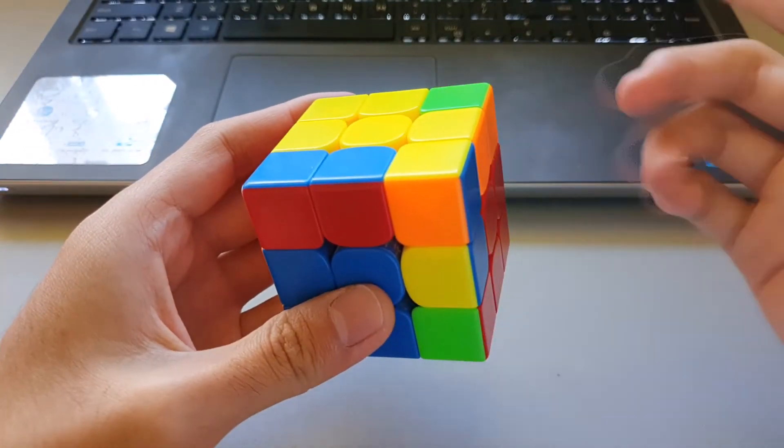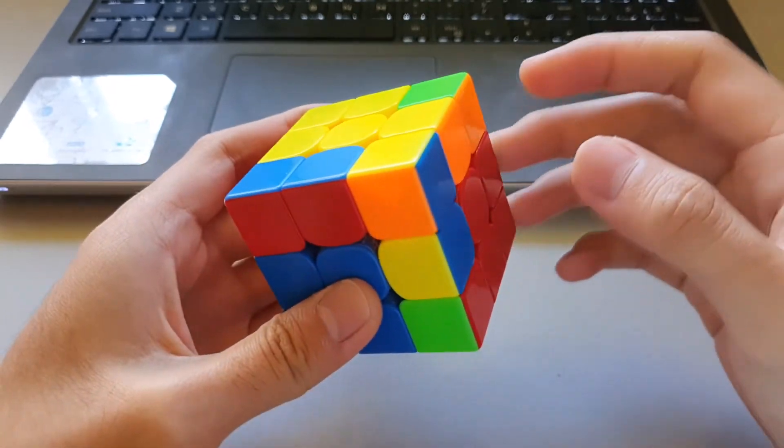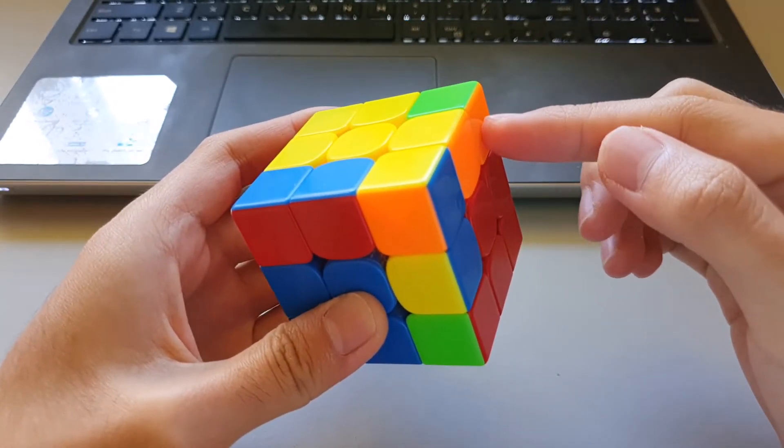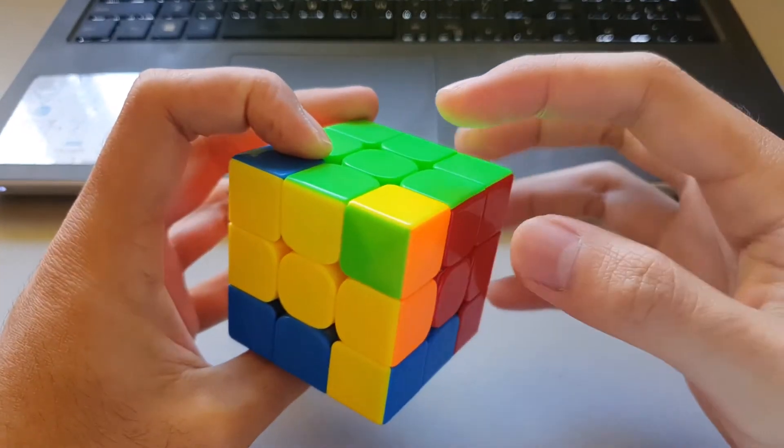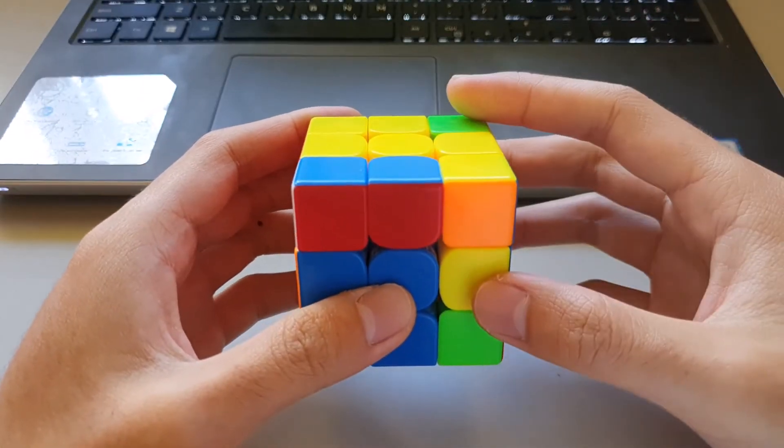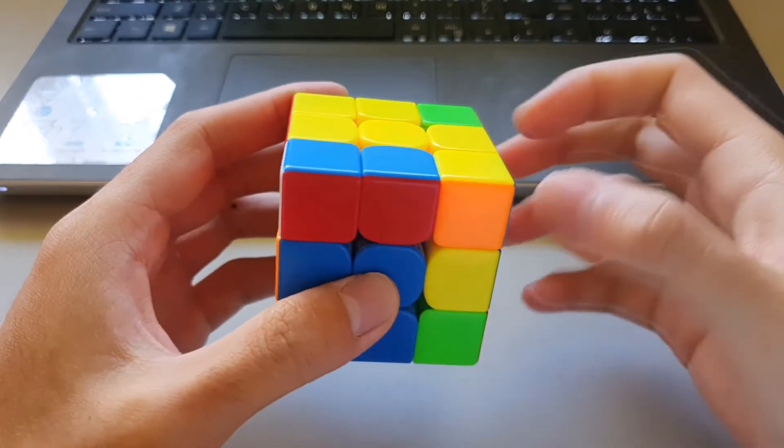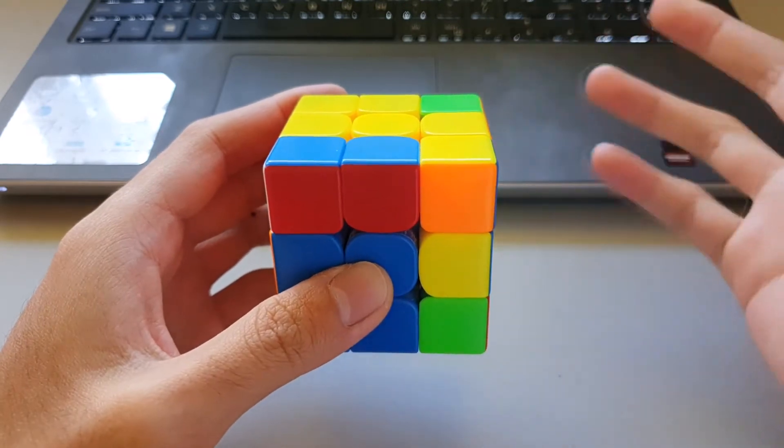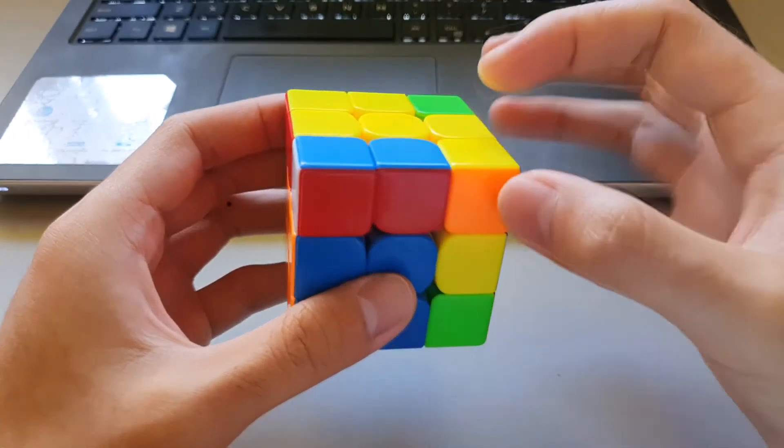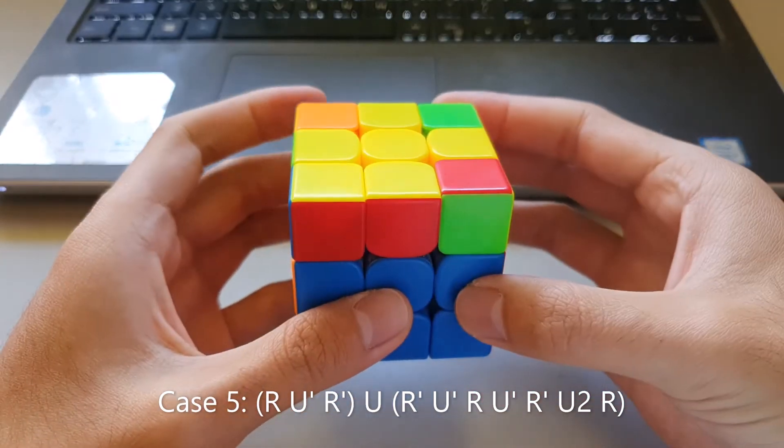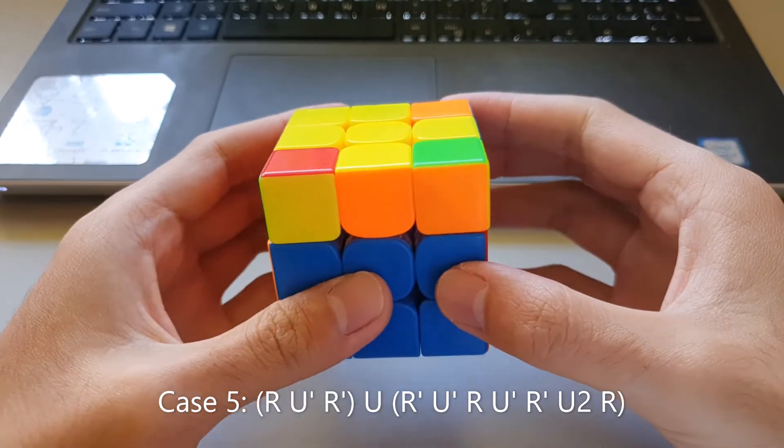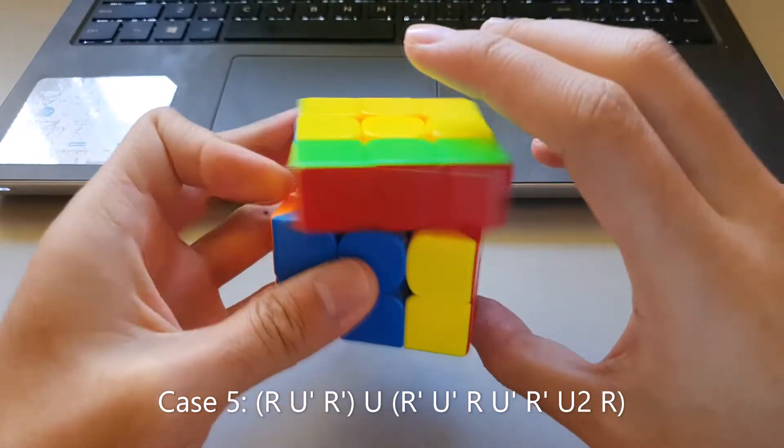So this case kind of similar to the previous one, however instead of having the yellow sticker here, it's actually pointing at the back. So in this case there's actually not a specific winter variation algorithm for it. The best that there is is to just insert this F2L pair normally and do this anti-sune case. Like that.